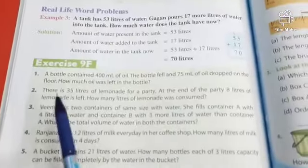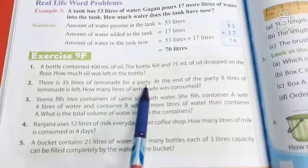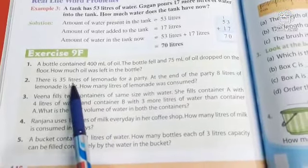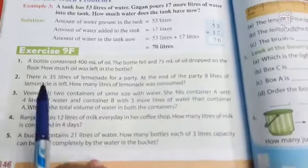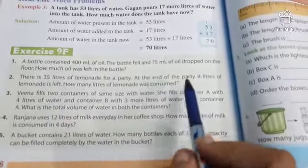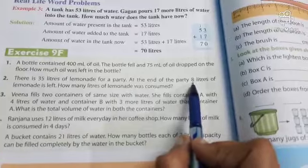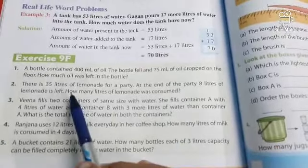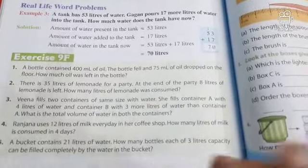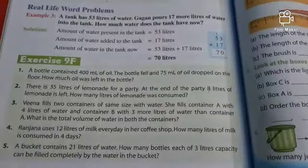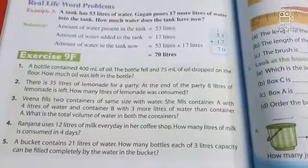Now question number 2. There is 35 liters of lemonade for a party. At the end of the party, 8 liters of lemonade is left. How many liters of lemonade was consumed? Now note down this question, question number 2.